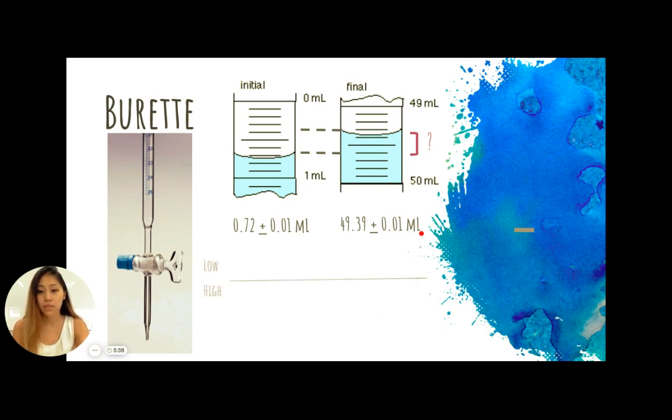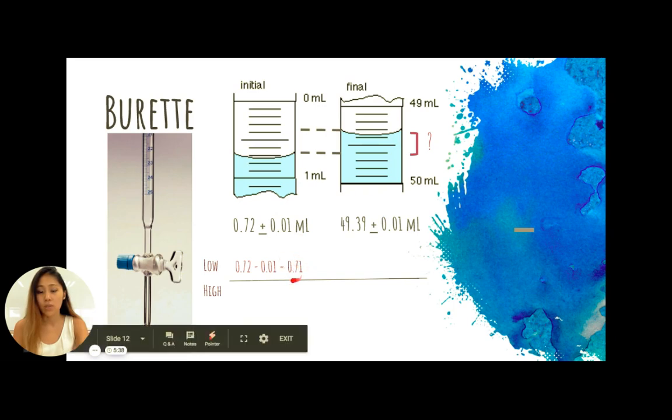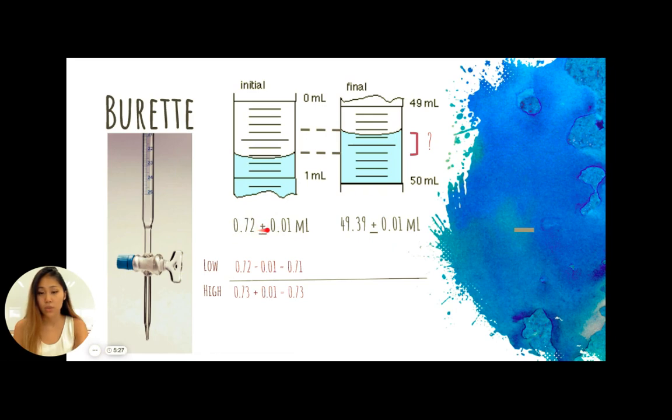So this means that if I did a high to low of my uncertainty range, this uncertainty tells us the range of the value that we predicted to be. So the low could be 0.72 minus 0.01 so we can have a low of 0.71. We can have a high of 0.73 by adding an uncertainty of 0.01. Similarly we can do the exact same thing for 49.39 and we would get 49.38 and 49.40.